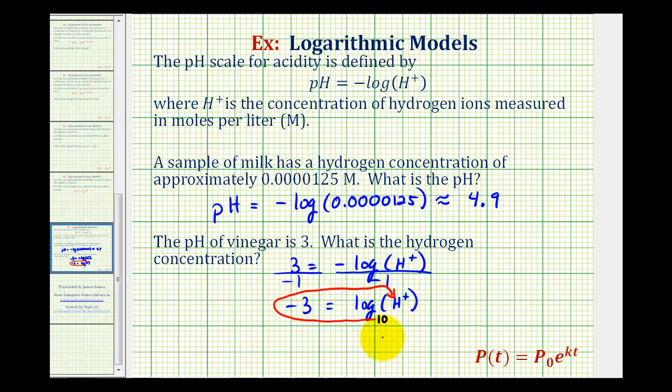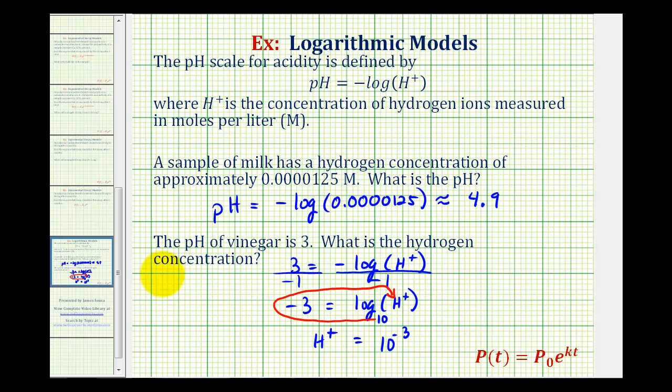So 10 to the negative 3 equals the hydrogen ion concentration. 10 to the negative 3 can be written as 1 over 10 to the positive 3 power, which equals 1 over 1000.